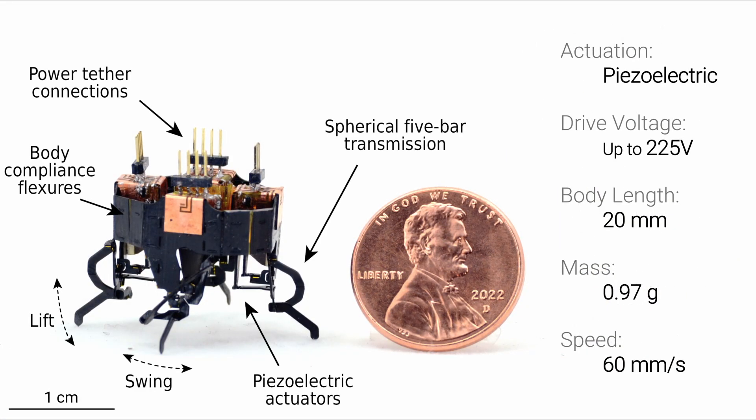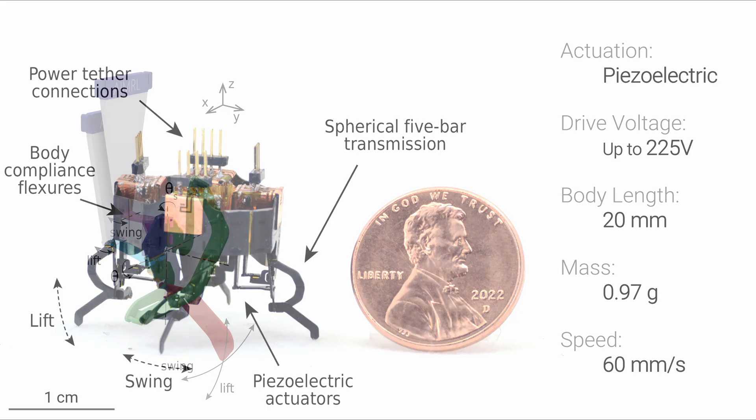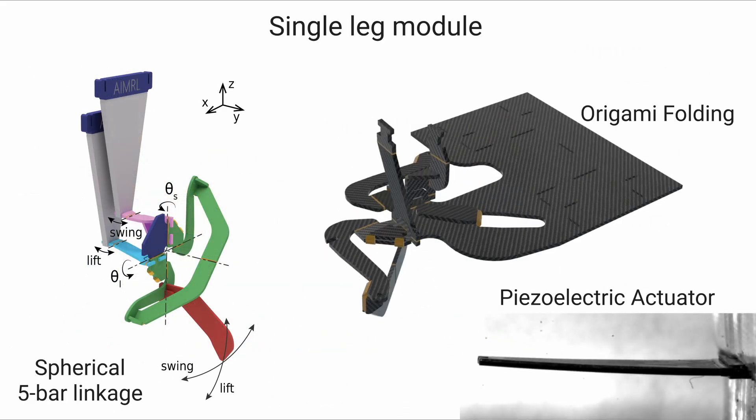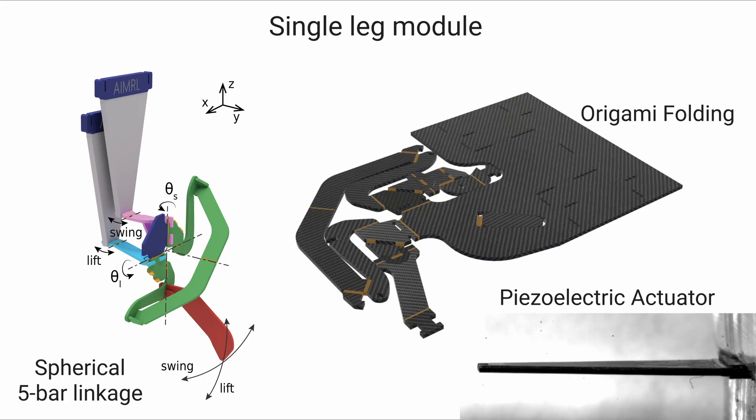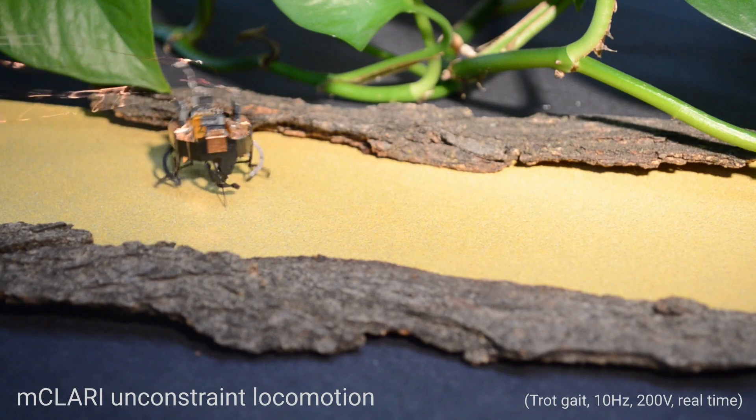mClery is a sub 1 gram system less than 2 cm in size. The modular design has 4 origami folded spherical 5 bar linkages powered by biomorph piezoelectric actuators.